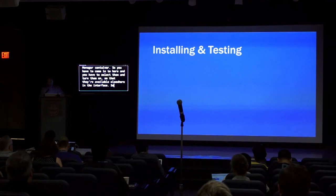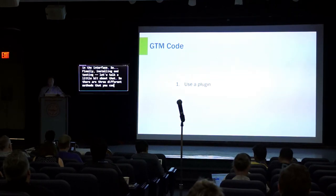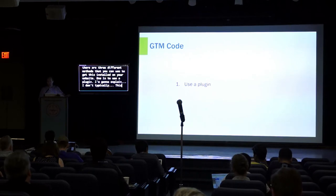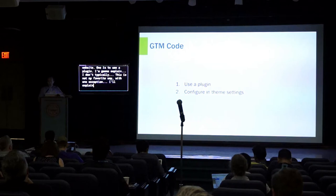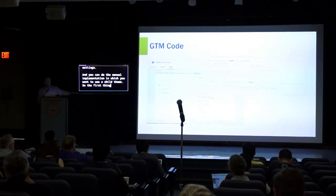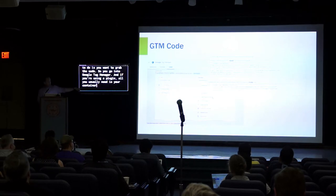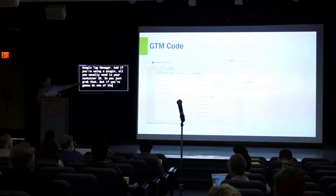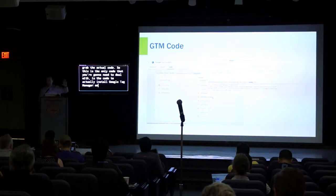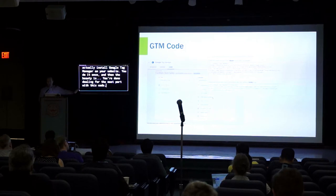Finally, let's talk about installing and testing. There are three different methods you can use to get GTM installed on your website: use a plugin, configure it in your theme settings, or do a manual implementation using a child theme. The first thing you need to do is grab the code from Google Tag Manager. If you're using a plugin, all you usually need is your container ID. If you're doing one of the manual implementations, you need to grab the actual code. This is the only code you're going to need to deal with to install Google Tag Manager on your website — you do it once, and then for the most part you're done dealing with code. All future changes are done through the interface.